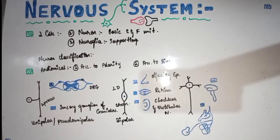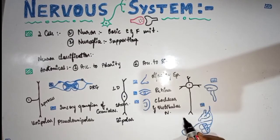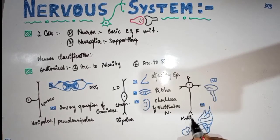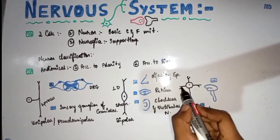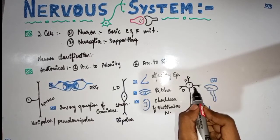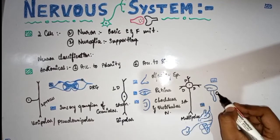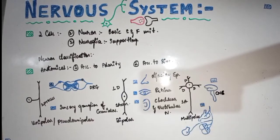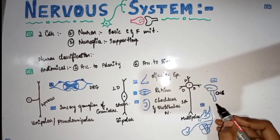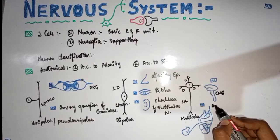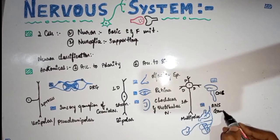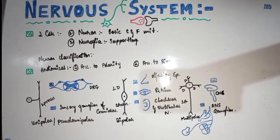The third type is the multipolar neuron, which consists of many dendrites and one axon. It is found in most portions of the CNS — such as descending pathways — and also in autonomic nervous system ganglia, where multipolar neurons can be seen inside those ganglia.